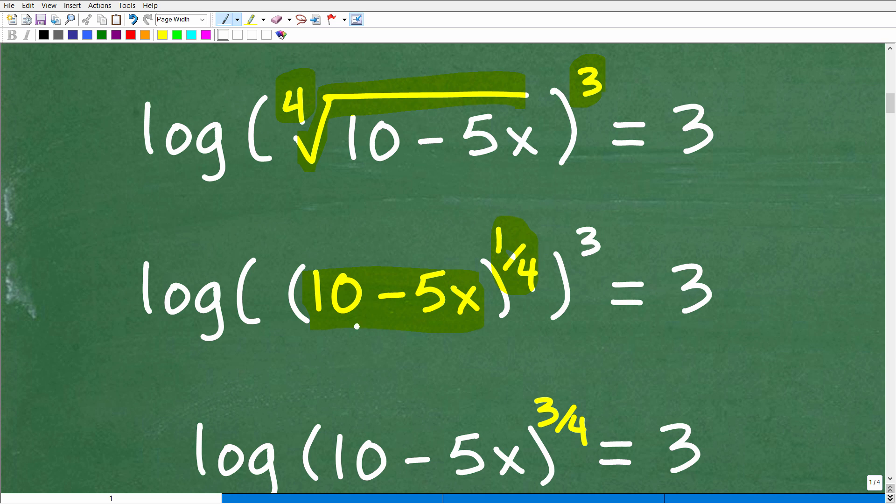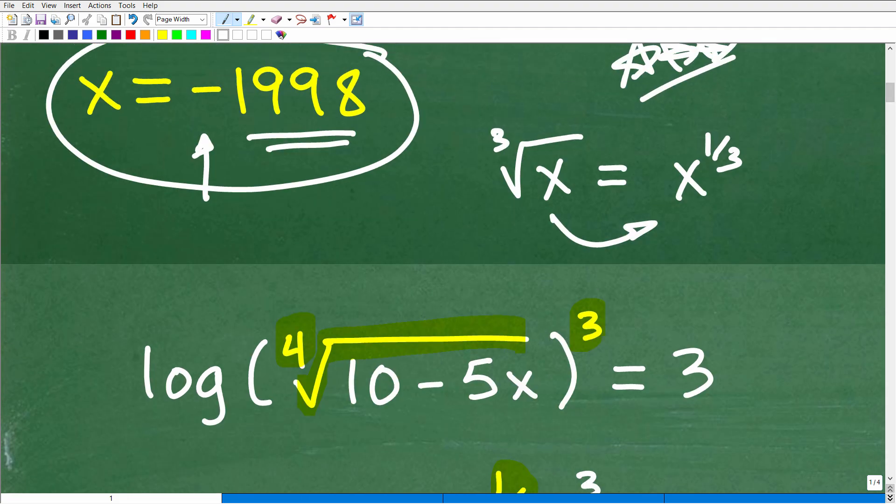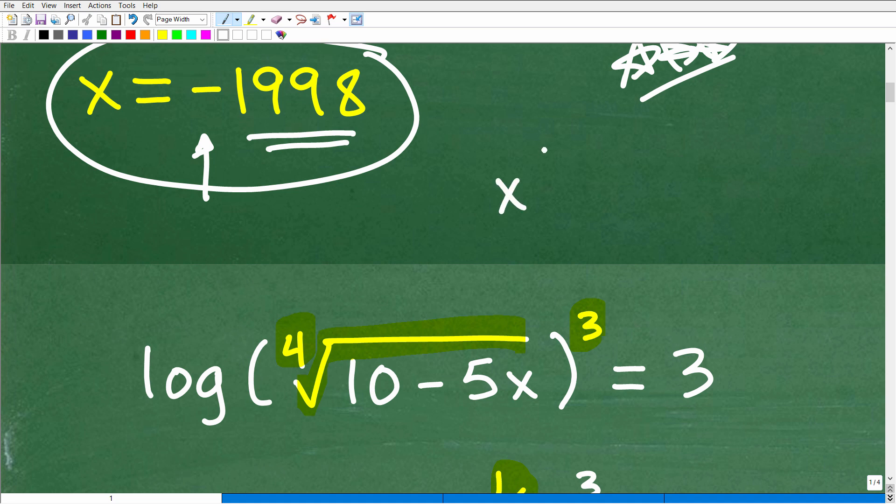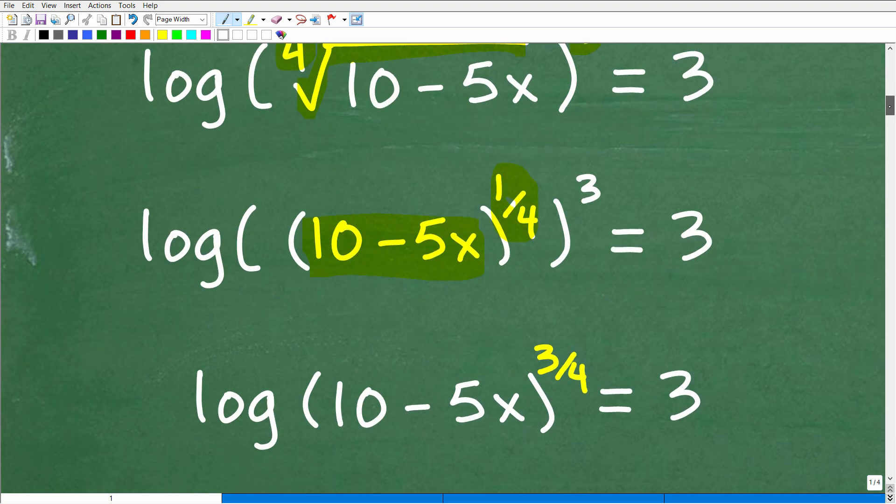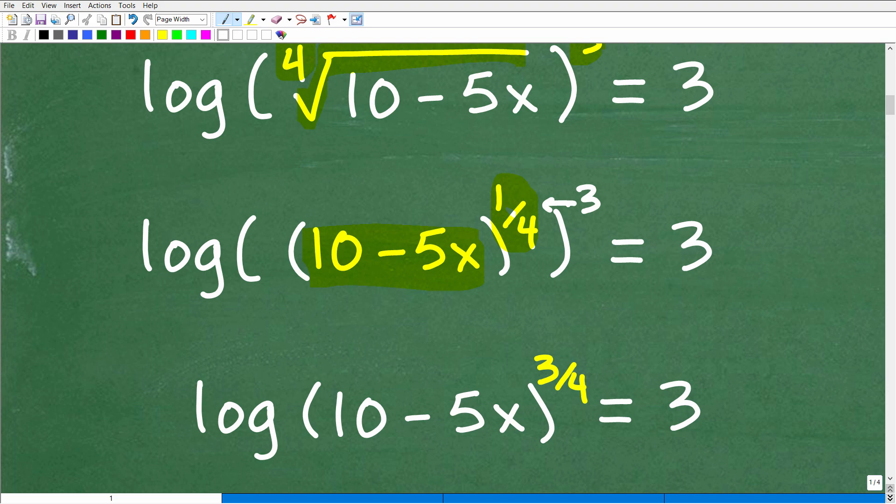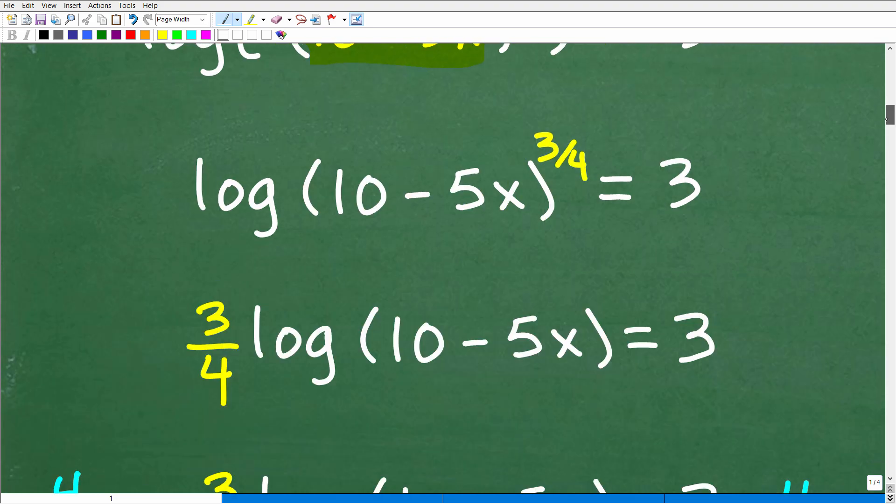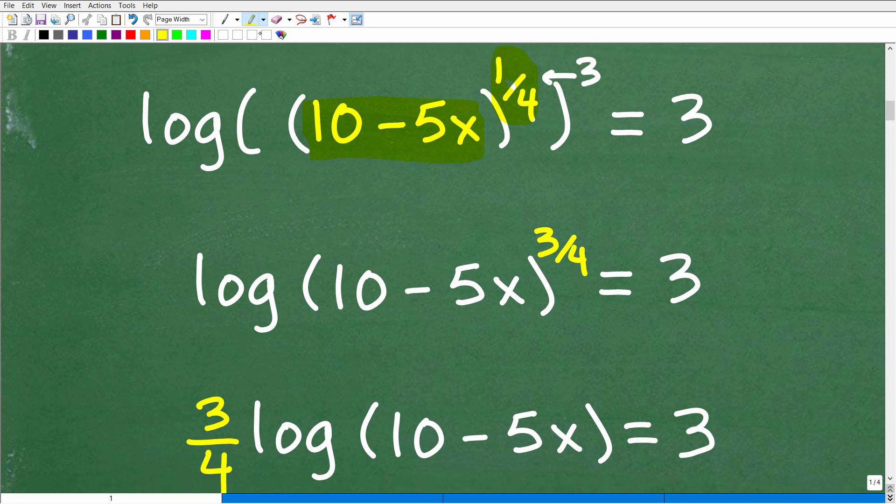So now we have a power here to a power. So we have to think back on our basic algebra. How do you handle that situation? Well, if I have x squared to the third power, that's equal to x to the sixth. So we take this outside exponent here and multiply it by that inside exponent, so that would be equal to x to the sixth. So that's what we're going to do here. So we're going to take this three and going to multiply it in to this one-fourth, and three times one-fourth is three-fourths. So what does that leave us? Well, it leaves us with this simpler equation. Now we have log, the log of 10 minus 5x to the three-fourth power is equal to three. So that's the first thing we need to do is kind of clean this up with using some algebra knowledge and skills.